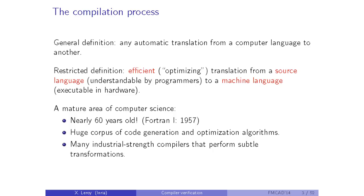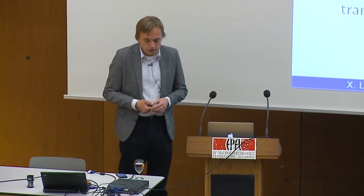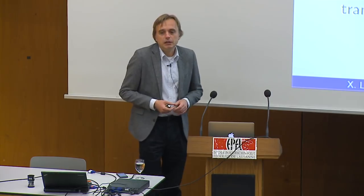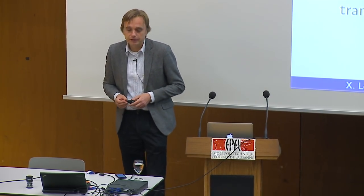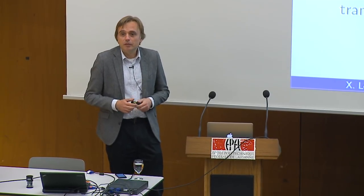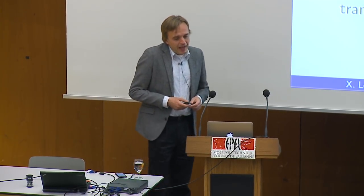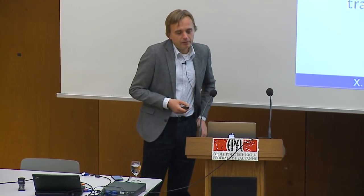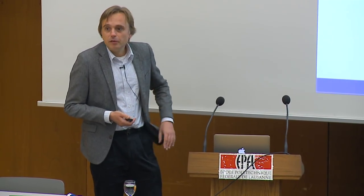This is one of the oldest areas of computer science. The first optimizing compiler was Fortran I in 1957, and it was already pretty advanced for the time because it had to be competitive with hand-written assembly code. Since then there has been a huge corpus of code generation and optimization algorithms, and many industrial-strength compilers both commercial and open source — GCC and LLVM are both excellent examples — that really perform subtle transformations on the programs you give them.